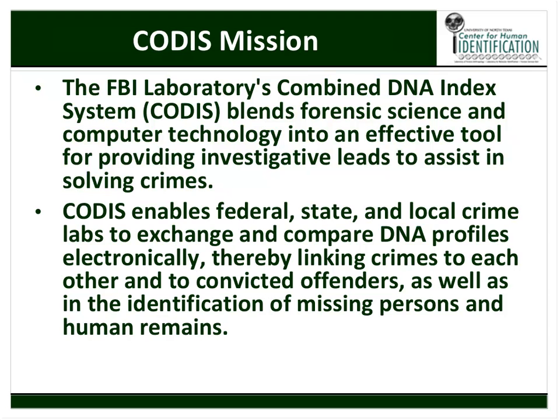Here is the CODIS architecture with three levels. LDIS represents the local DNA indexing system. Local labs feed to their state indexing system — SDIS. Here in Texas, we're an LDIS laboratory at the Center for Human Identification. We feed up to the SDIS lab in Texas, which is the Austin DPS, which then uploads to NDIS — the national DNA indexing system. This allows communication from the local level throughout the United States.